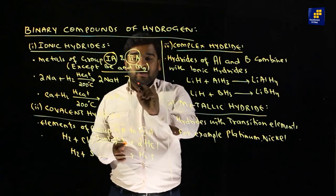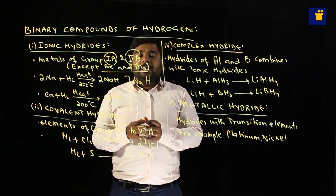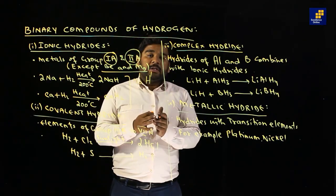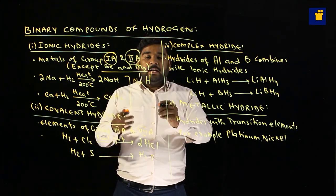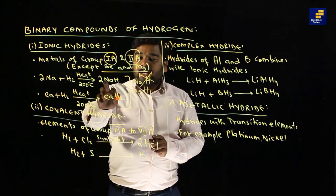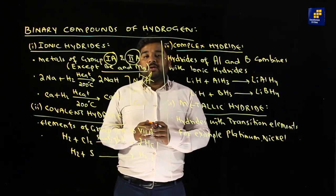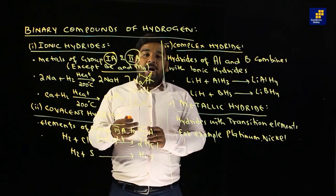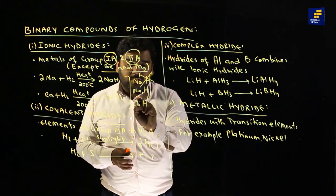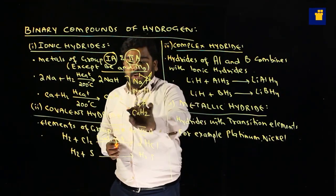यह कैसे possible है — जब भी दो elements आपस में मिलते हैं कोई compound बनाने के लिए, तो हम उनकी valencies को top पर लिखते हैं, regardless of charges, और फिर swap करते हैं। Na 1 electron loose करेगा, hydrogen 1 electron gain करेगा। Swap करने के बाद Na¹H¹ — 1 नहीं लिखते — formula बना NaH। Calcium की valency 2 है (last shell में 2 electrons), swap करने पर CaH₂ बनता है।